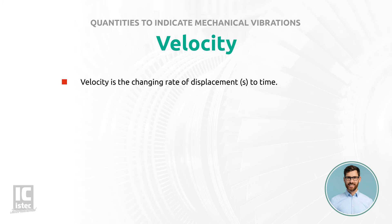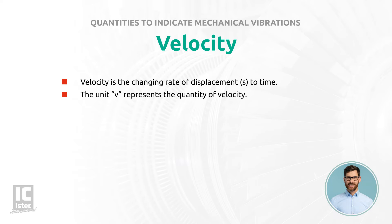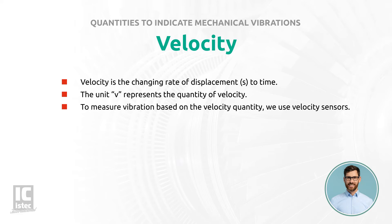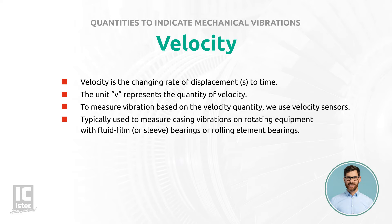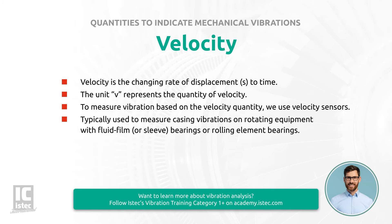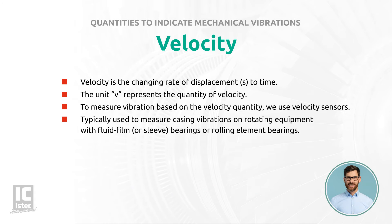Velocity is the changing rate of displacement to time. The unit V represents the quantity of velocity. To measure vibration based on the velocity quantity, we use velocity sensors. These sensors are typically used to measure casing vibrations on rotating equipment with fluid film, sleeve bearings, or rolling element bearings.